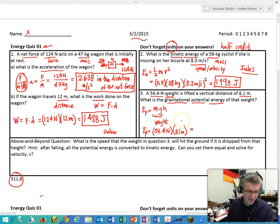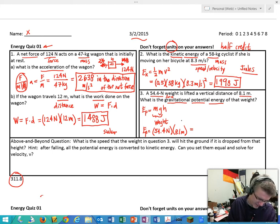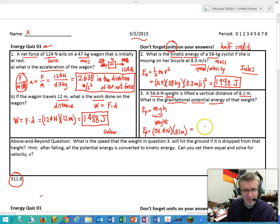So that means that potential energy has the mg already together in it, and then the height 8.1 meters. That all equals, you can do that on the calculator, 54.4 times 80.1 equals 440.64. And the units for that potential energy is joules again. Okay, so now.